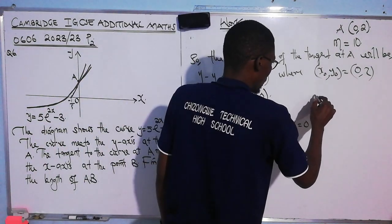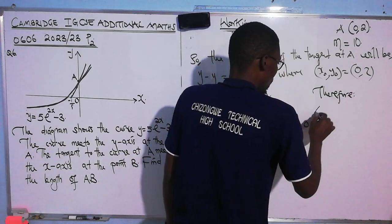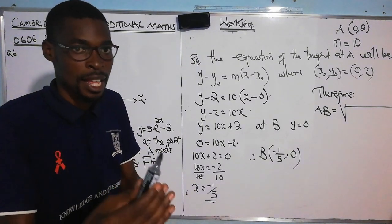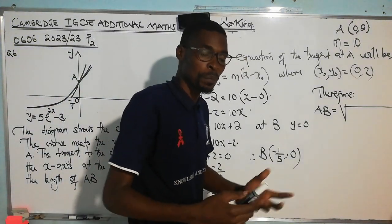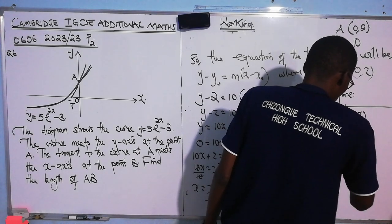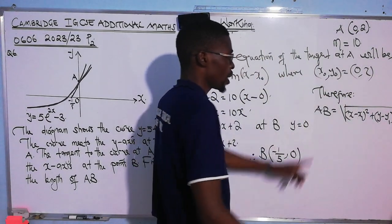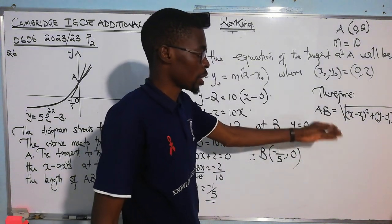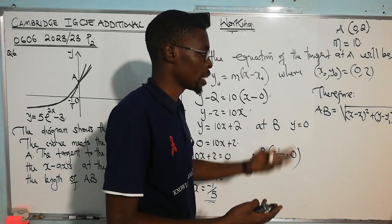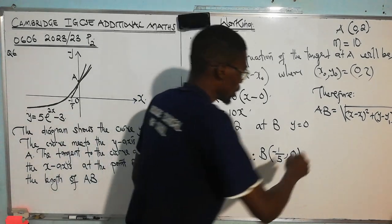Now let us get the length of AB. We have the coordinates of both points. The length of AB equals the square root of (x − x₁)² + (y − y₁)², where (x, y) are the coordinates of A and (x₁, y₁) are the coordinates of B, or you can switch them — either way is fine.